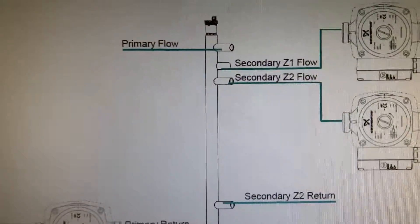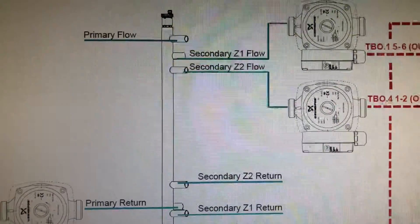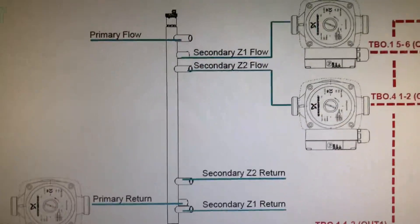On your low loss header you've got these. You'll find out that on your standard system you've got a primary pump for the heat pump and you've got a secondary zone which is your main house radiators. You've also got a domestic hot water pump.